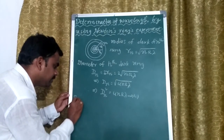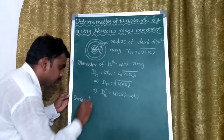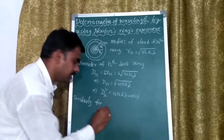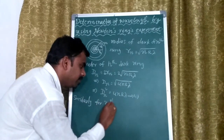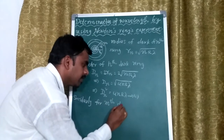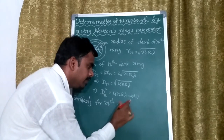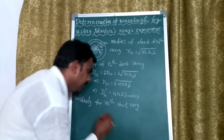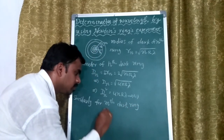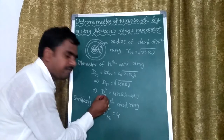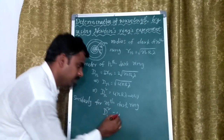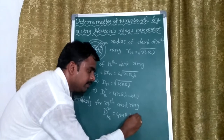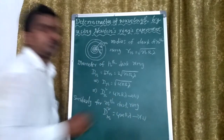Similarly, for the mth dark ring, d_m squared equals 4·m·R·λ. This is called Equation 2.